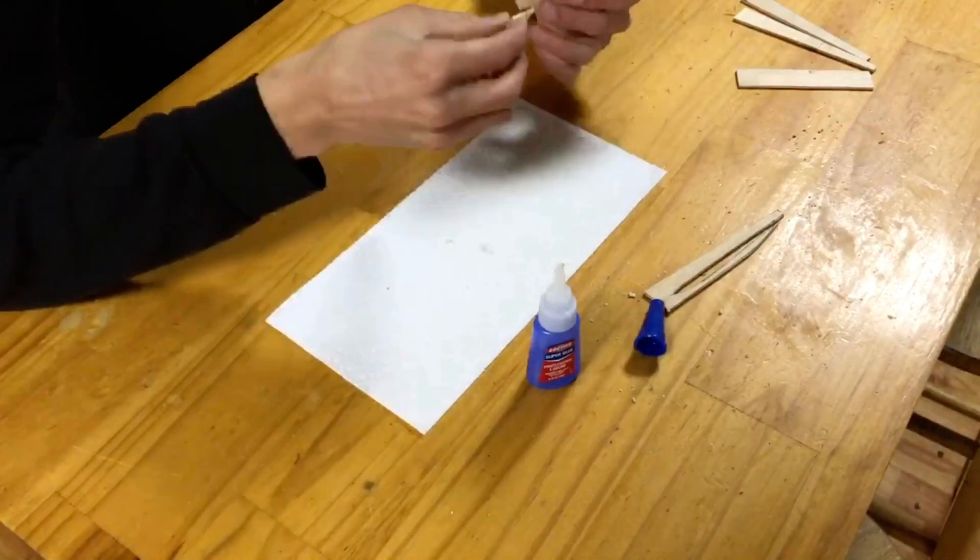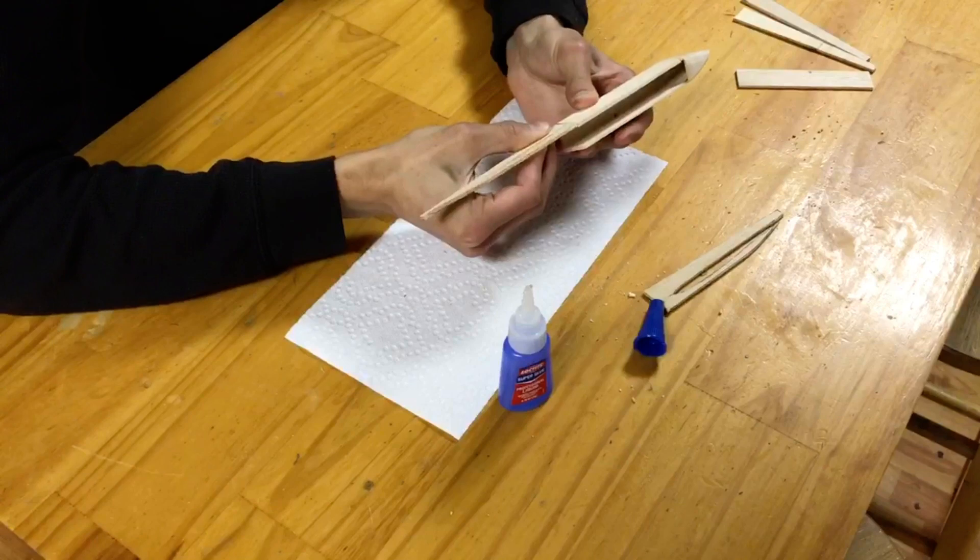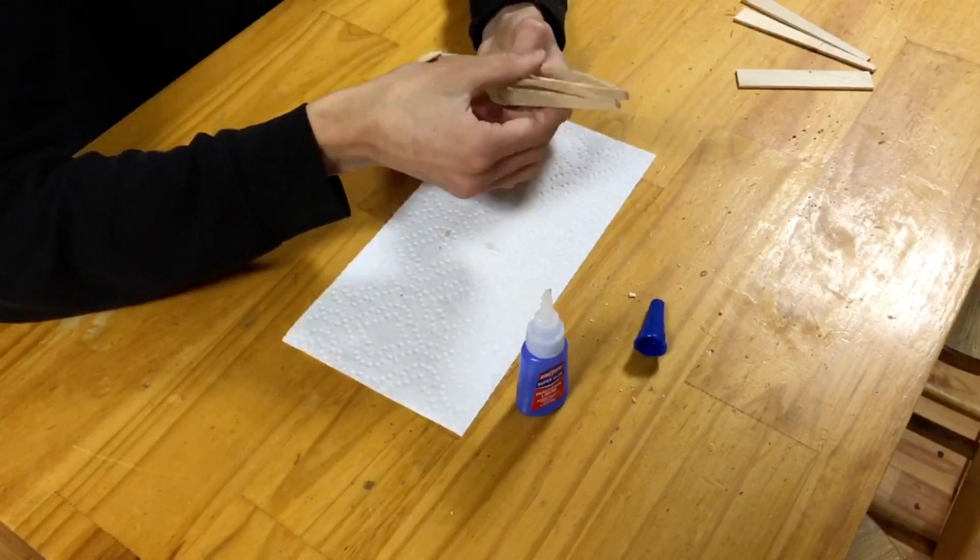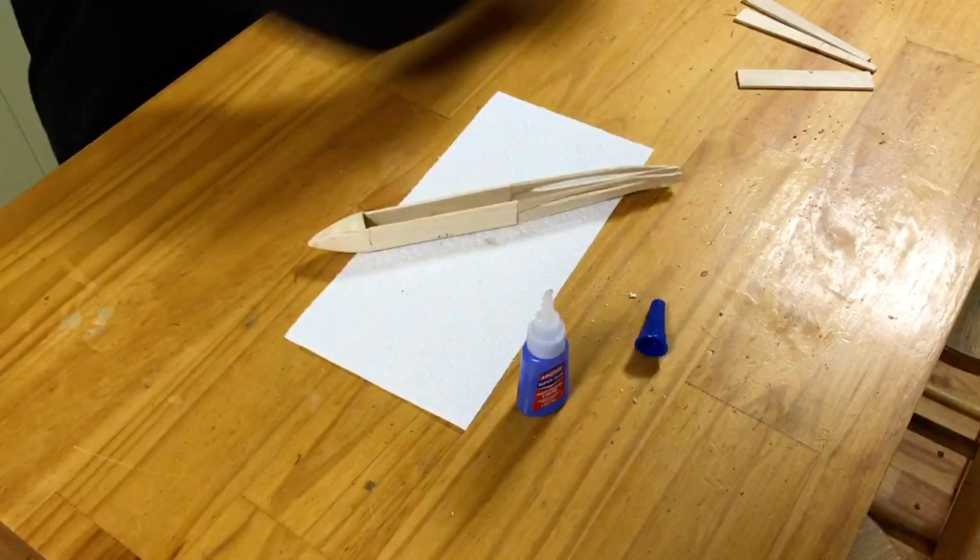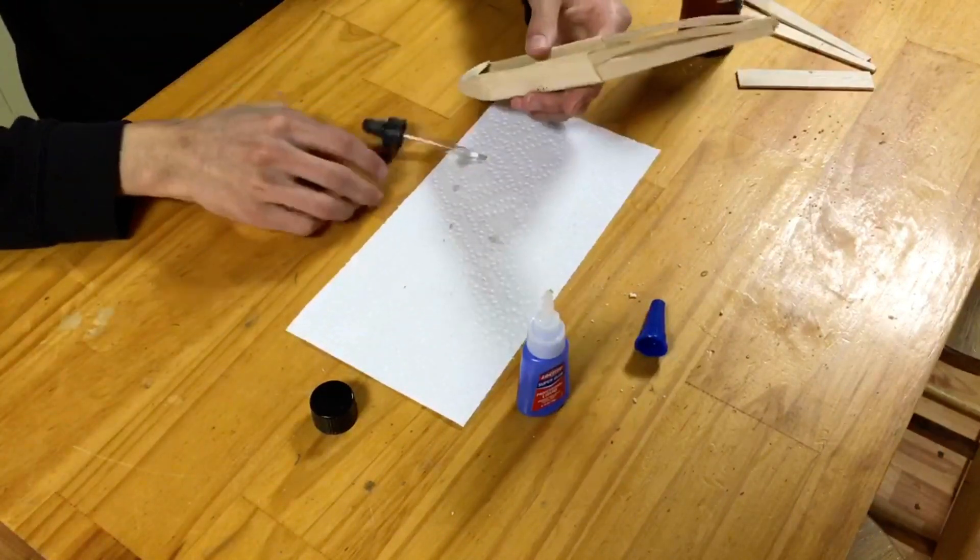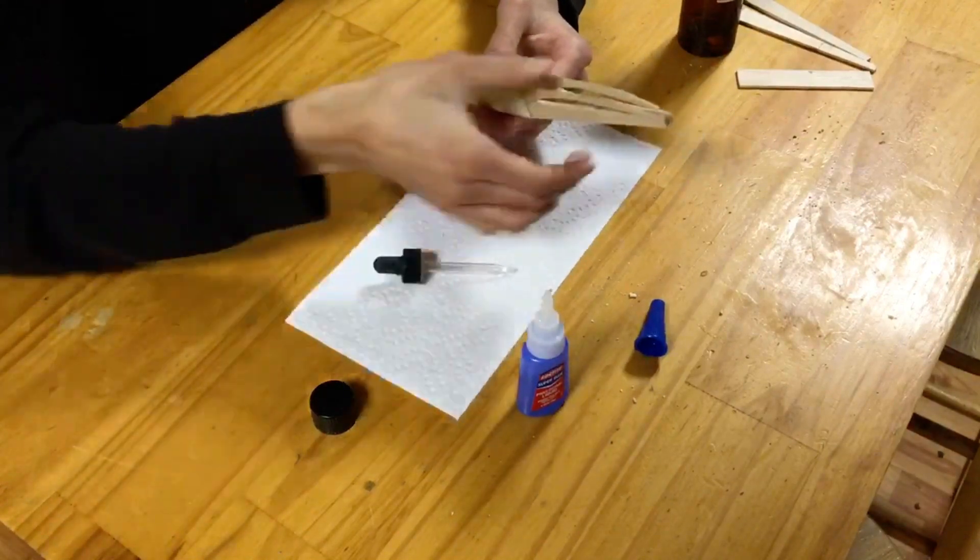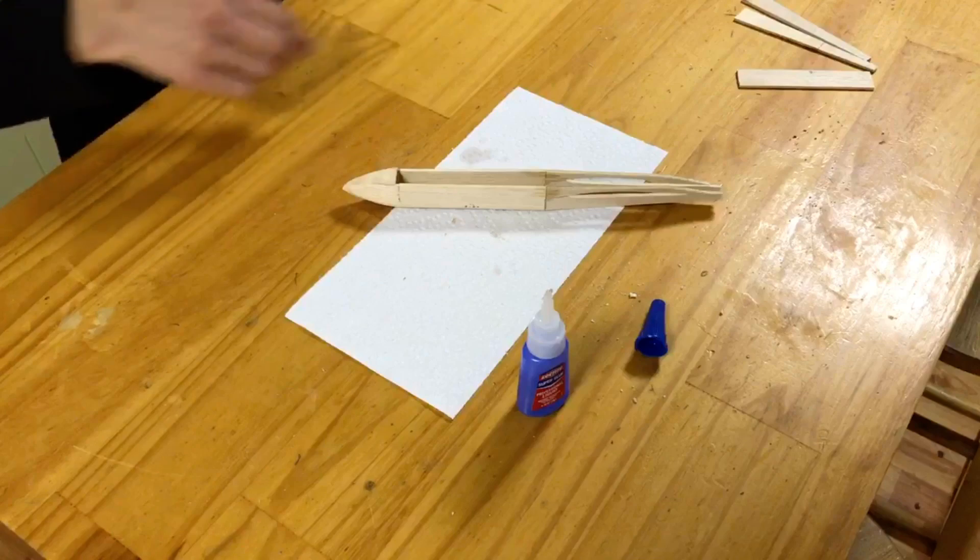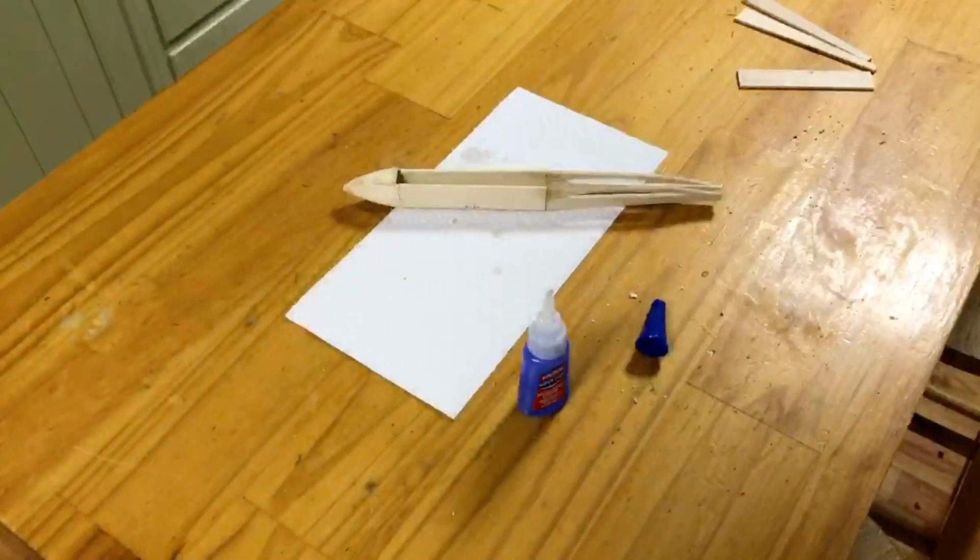We'll now simply glue the sides of the aft section to the sides of the center section, as you see I'm doing here. Careful in this step that you do not adhere the tips of the aft sections, as we did with the nose sections. Those must be apart slightly, such that they fit the tail boom later. As you can see here, again I'm using my accelerant, and simply putting a little bit along these glue joints to make everything set nicely.